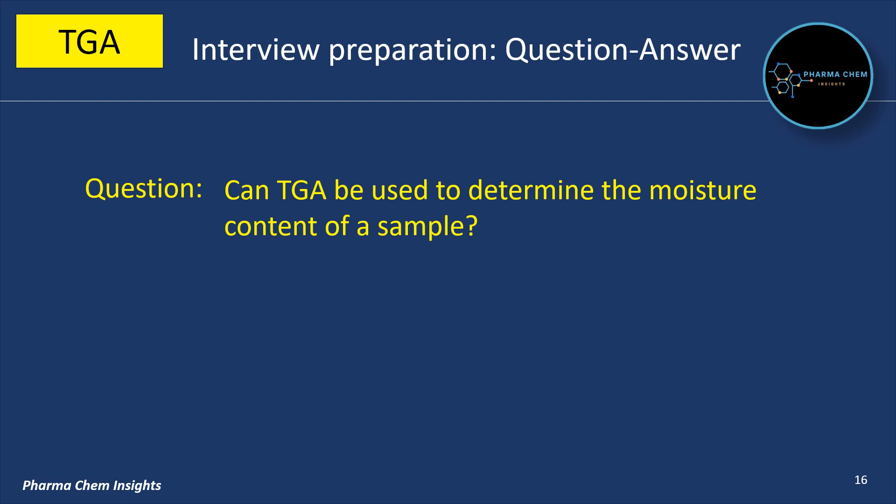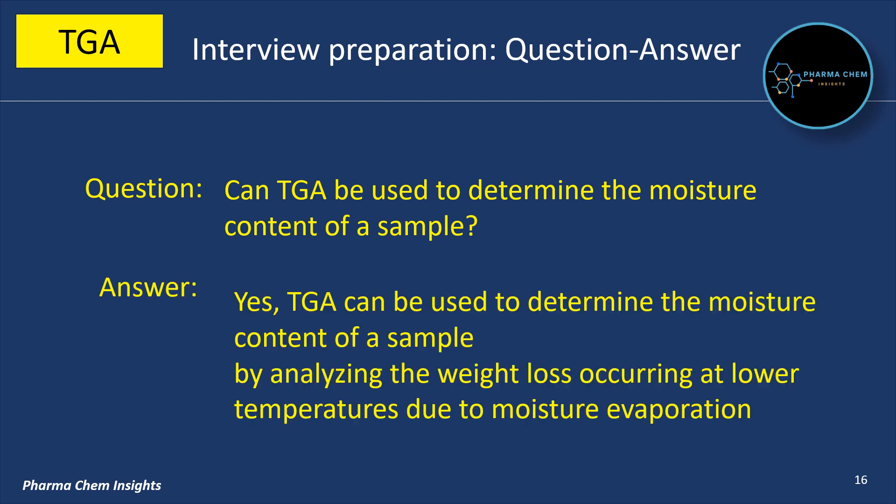Can TGA be used to determine the moisture content of a sample? Yes, TGA can be used to determine the moisture content of a sample. This can be done by analyzing the weight loss occurring at lower temperatures due to moisture evaporation.